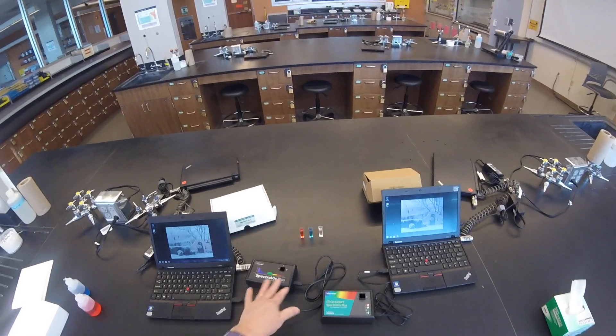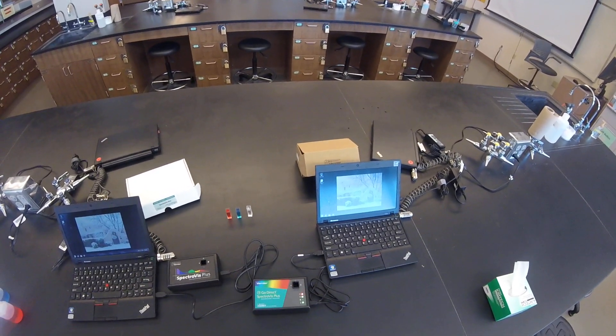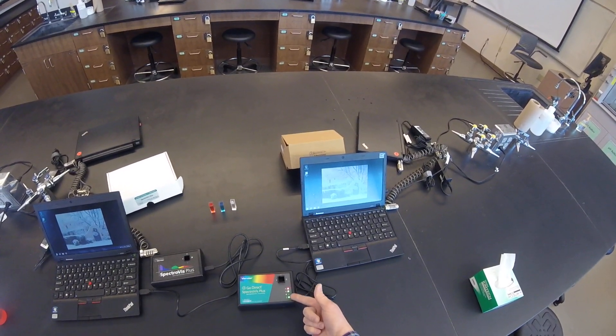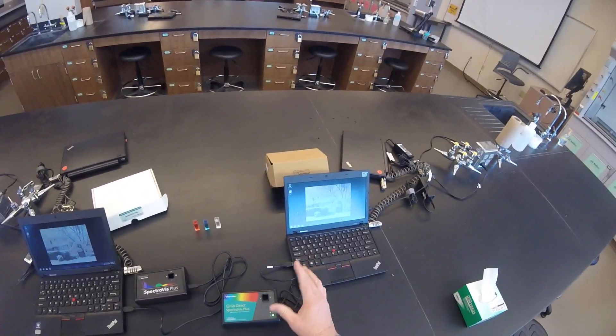What you'll see is nothing will actually show up here, but we're going to see lights on the GoDirect SpectraVis Plus. It indicates that it's being powered through the USB. The power is on. This red light means that there's no battery attached, and that's fine.